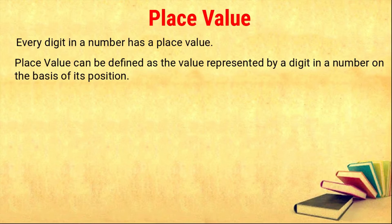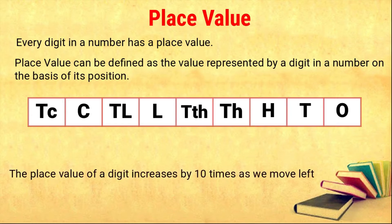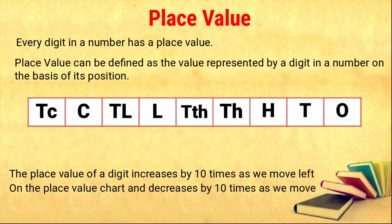The place value chart goes: ones, tens, hundreds, thousands, ten thousands, lakhs, ten lakhs, crores, ten crores. The place value of a digit increases by ten times as we move left on the place value chart, and decreases by ten times as we move right.